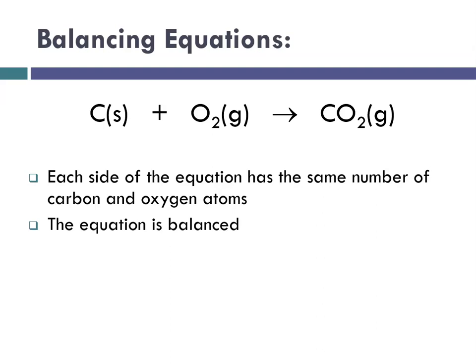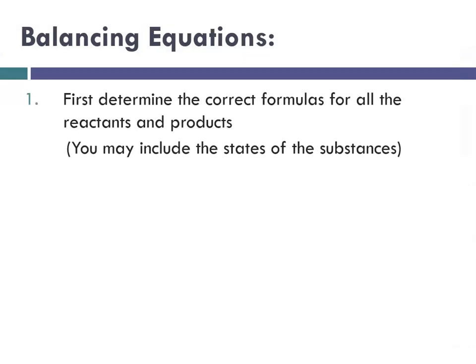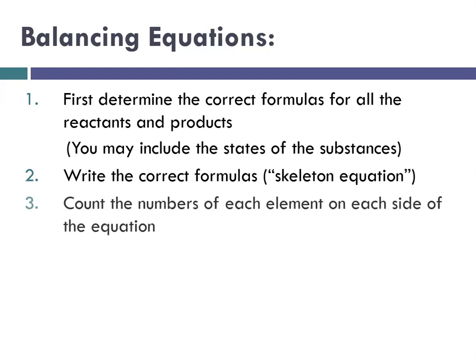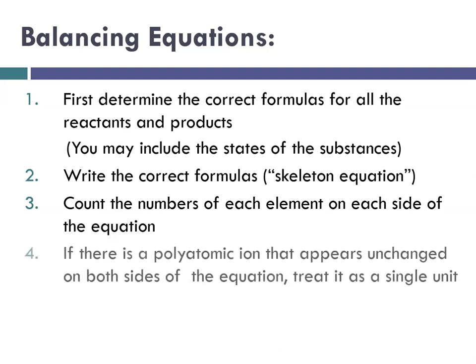So there's a few steps that are helpful in balancing equations. So the first thing is to determine that you've written the correct formulas for all of the reactants and products. And you may include the states of matter of the substances, like solid liquid gas, etc. Then you write the correct formulas, and that leads you to your so-called skeleton equation. And then you tally. You count the numbers of each element on each side of your equation.